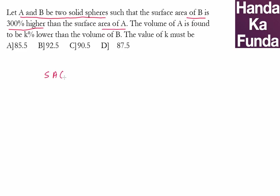So what this means is that surface area of B is four times surface area of A. Why? Well, it is up by 300%, which means it is up by three times the value. And if something is more than three times, that means it is four times the value. So surface area of B is four times the surface area of A.